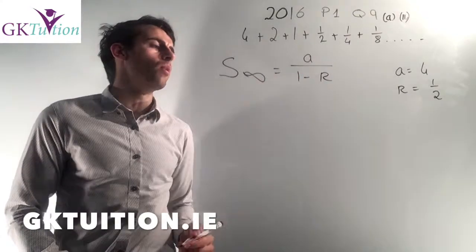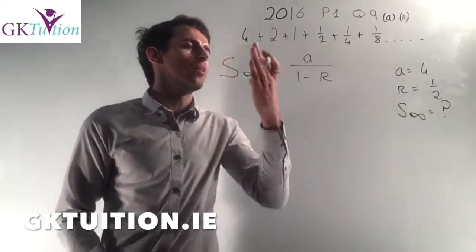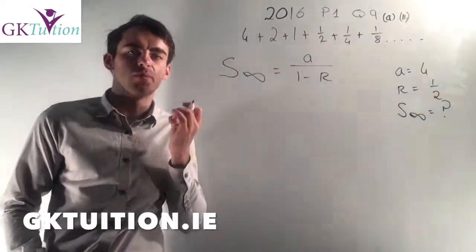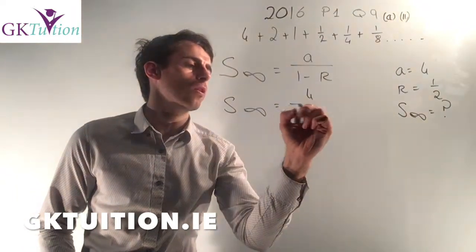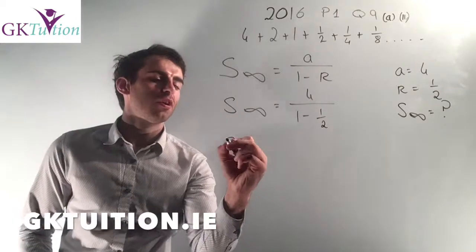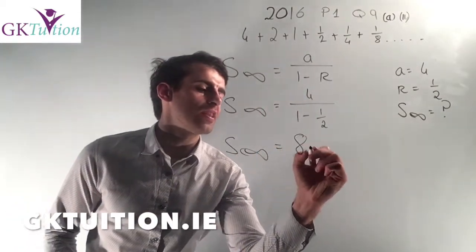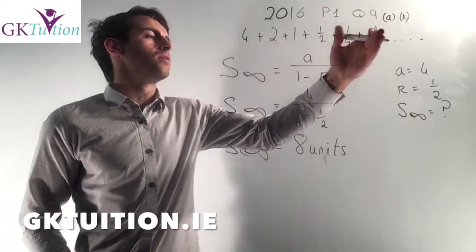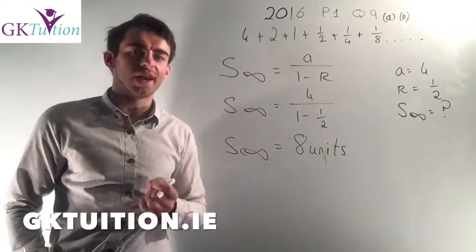In this question I know my A and I know my R and I want to work out what is the sum to infinity — in other words, if this pattern goes on forever, what value will the sum of the terms be approaching? S_infinity is A which is 4, over 1 minus R which is 1 minus a half. So S_infinity is just 4 over a half, which works out as 8 units. So if this pattern was to go on forever, the sum of all the terms is approaching 8 — it will be getting closer and closer to 8 but never quite actually get there.